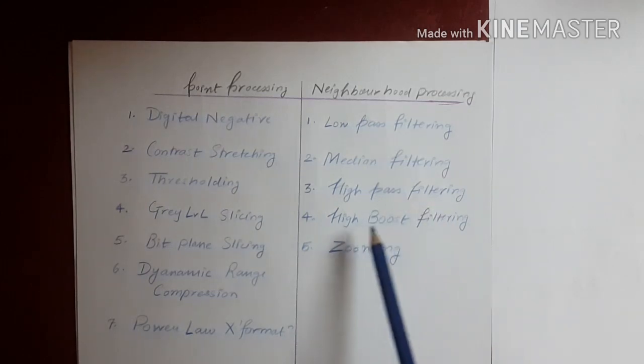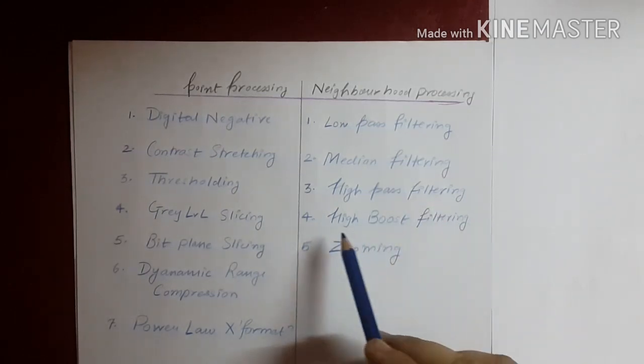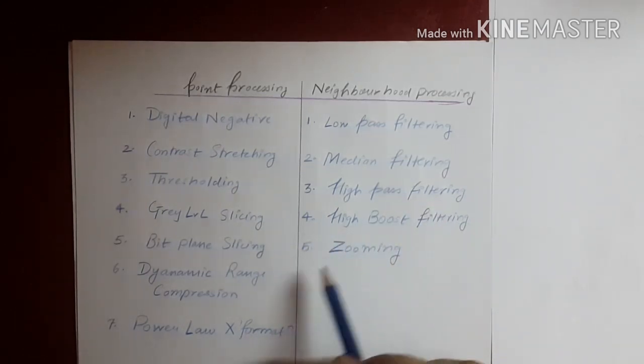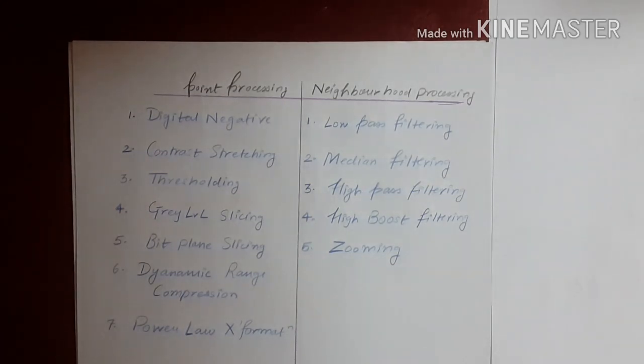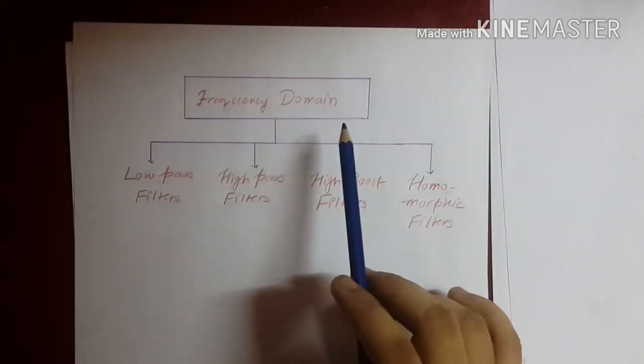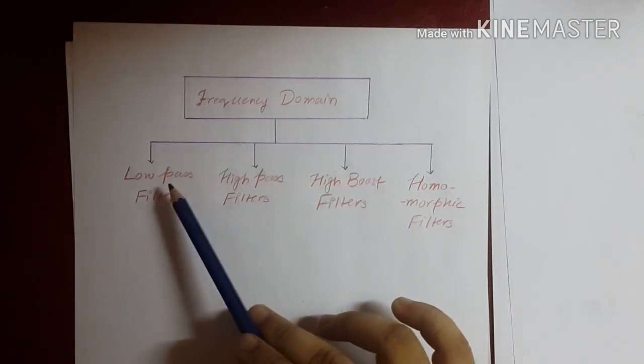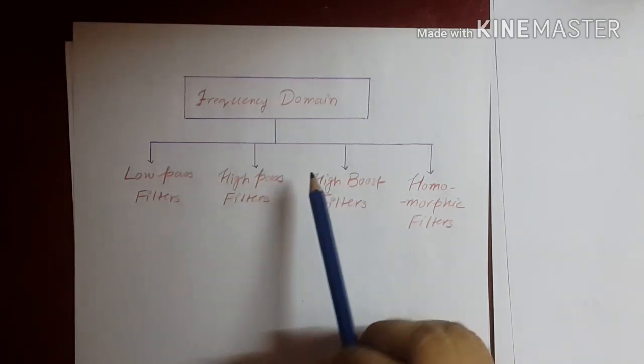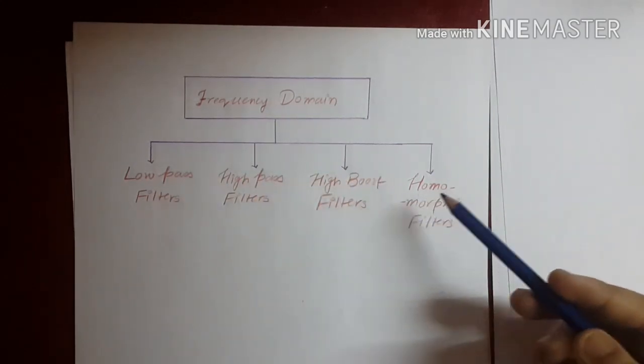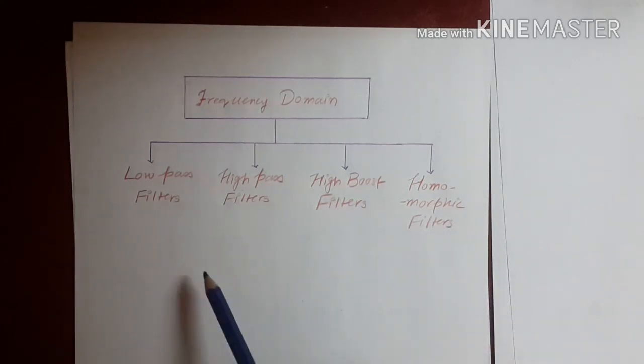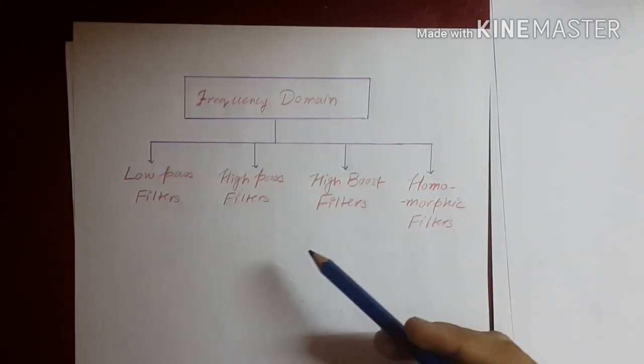And an additional fifth type, which is zooming. In frequency domain enhancement techniques, we have low pass filters, high pass filters, high boost filters, and homomorphic filters. All these filters are in frequency domain; that is, the processing is done in frequency domain by using the Fourier transform.